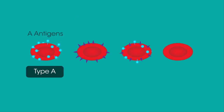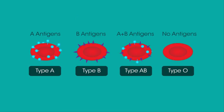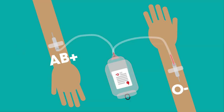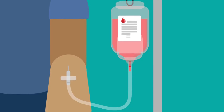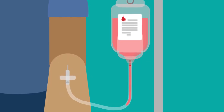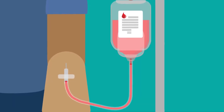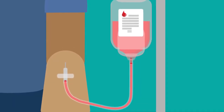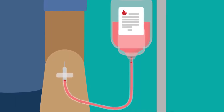In summary, our blood group is determined by the presence or absence of A and B antigens on our red blood cells, which are inherited from our parents. The blood group you are also determines who you can receive blood donations from and who you can donate blood to. And thankfully, now that doctors understand this, patients can safely receive life-saving blood transfusions.